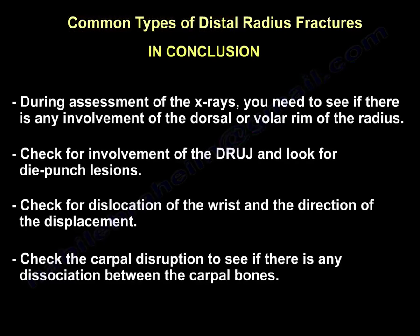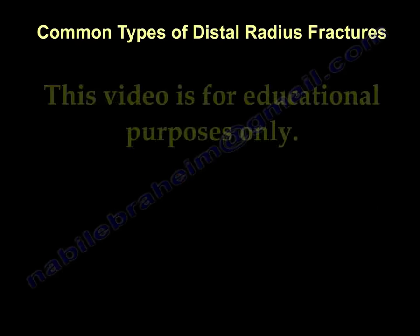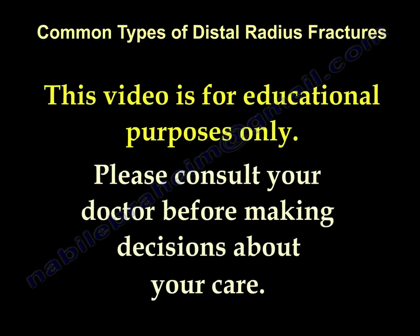In conclusion, there are many types of distal radius fracture. When assessing the x-rays, check for involvement of the dorsal or volar rim of the radius, involvement of the DRUJ, and look for die punch lesions. Check for dislocation of the wrist and the direction of displacement, and assess carpal disruption for any dissociation between the carpal bones. This video is for educational purposes only — please consult your doctor before making any decision about your medical care.